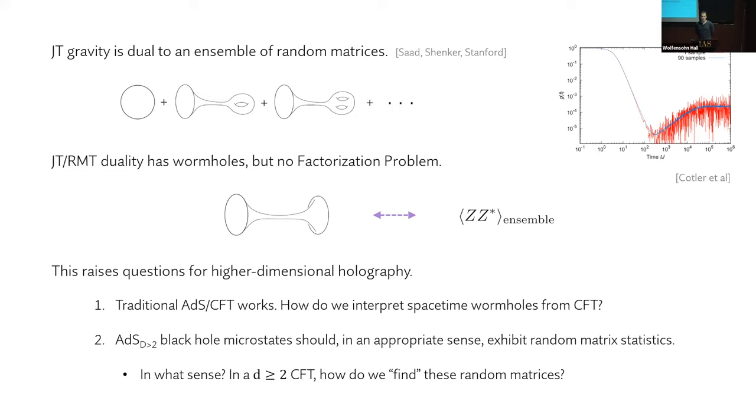As we all know, JT gravity is dual to an ensemble of random matrices, as established in this paper, and that duality has space-time wormholes, the no factorization problem because of the presence of an ensemble on the boundary.